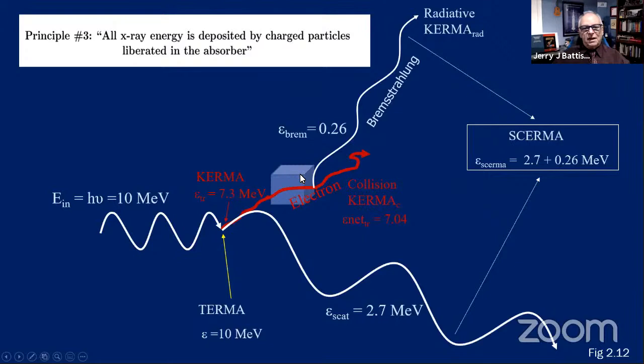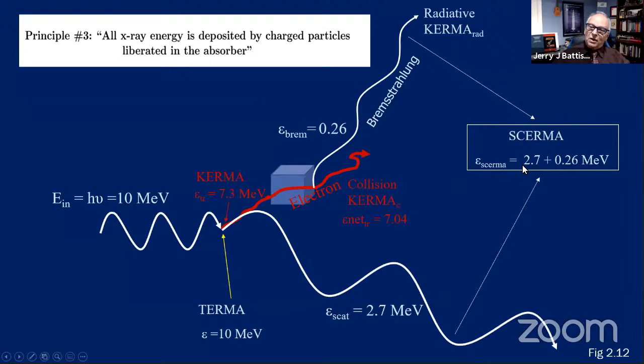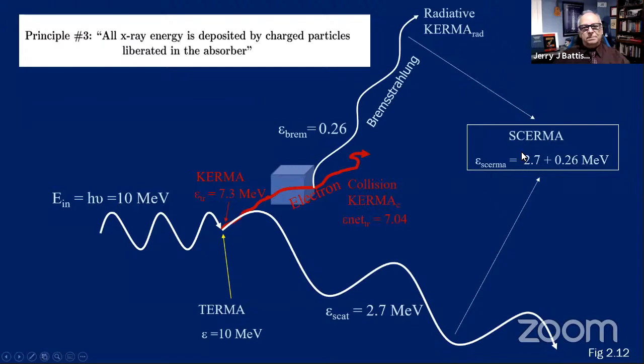Photons send their energy to electrons and to scattered photons. This is called the TERMA, used in the convolution method. There is also the KERMA from collisions along the path — collision kerma and radiative kerma — and the scattered photon component combines into a quantity called the S-KERMA. These are terms used by Swedish medical physicists.